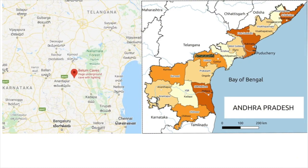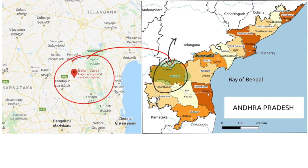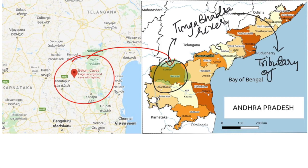Belam Caves are found in the Kurnool district, and Kurnool is a city located on the bank of the Tungabhadra river, which is a tributary of the Krishna river.